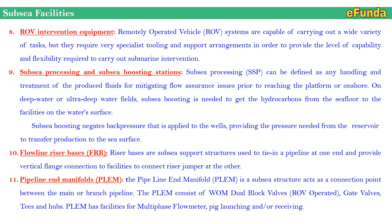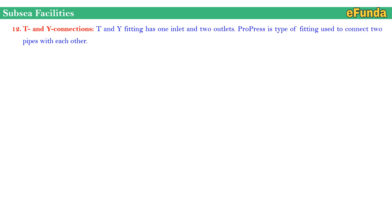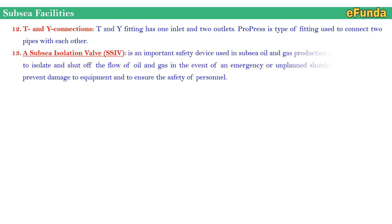The PLEM consists of WOM dual block valves (ROV-operated gate valves), T's and hubs. PLEM has facilities for multi-phase flow meter, PIG launching and receiving. Twelfth, T and Y connections — a T and Y fitting has one inlet and two outlets. Thirteenth, subsea isolation valve (SSIV) — an important safety device used in a subsea oil and gas production system, designed to isolate and shut off the flow of oil and gas in the event of an emergency or unplanned shutdown.